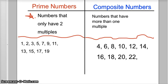Composite numbers: Numbers that have more than one multiple. For example, four, six, eight, ten, twelve, fourteen, sixteen, eighteen, twenty, twenty-two.